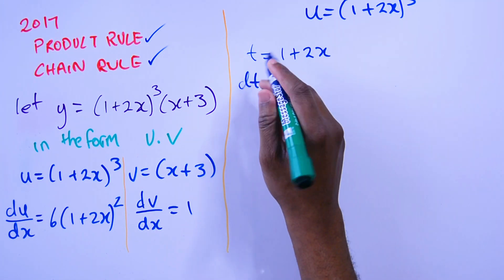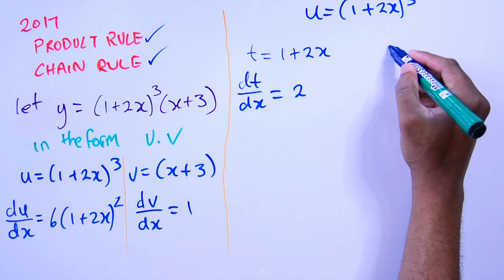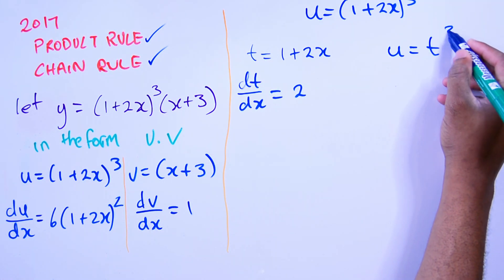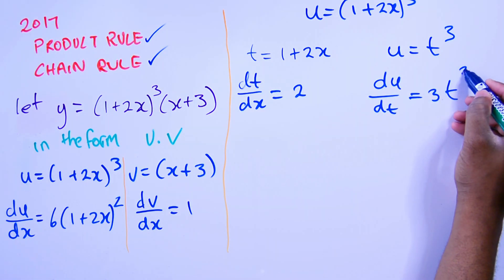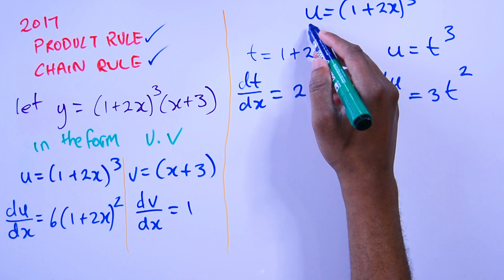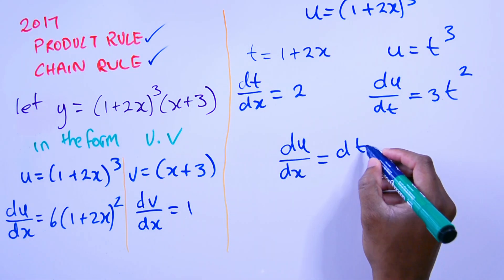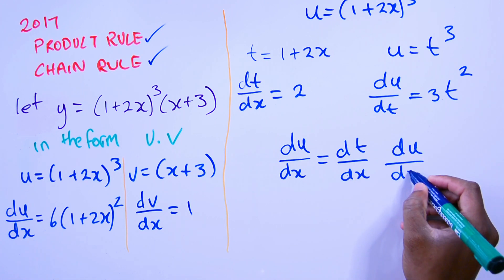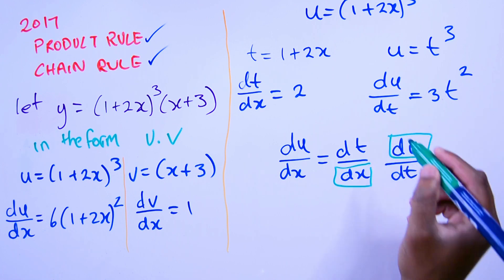Now we can differentiate t with respect to x. Since t is equal to 1 + 2x, that means u is now equal to t to the power of 3. So du/dt is 3t², and now to differentiate du/dx, we can apply the chain rule.